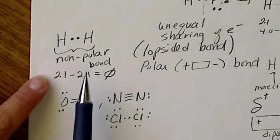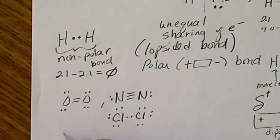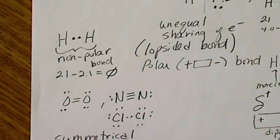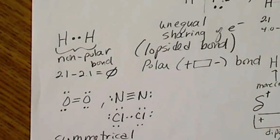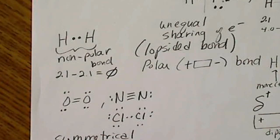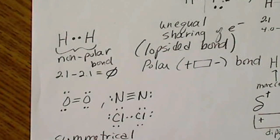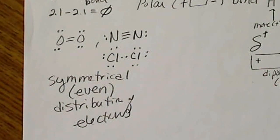So any time two atoms are the same and they're bonded to each other, we're going to have a symmetrical, not lopsided, but we're going to have a symmetrical or an even distribution of electrons, or an even sharing of electrons. And we're going to see what that has to do with a molecule being polar or non-polar.